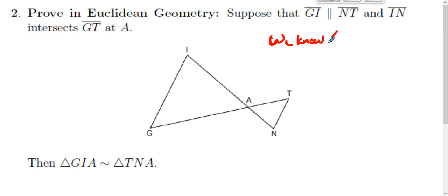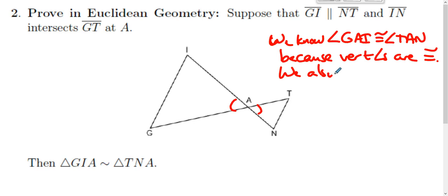And then we know that angle GAI is congruent to angle TAN because vertical angles are congruent.